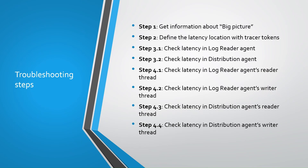Following are the troubleshooting steps I'm going to share. Overall, there are four steps. I'm dividing steps 3 and 4 into subsections because you might need only one of these steps to check based on the previous step's finding. For example, if you find latency in the distribution agent in step 2, you will check only step 3.2, and if you find an issue with the reader thread only, you will go directly to step 4.3. You don't need to go to other steps.